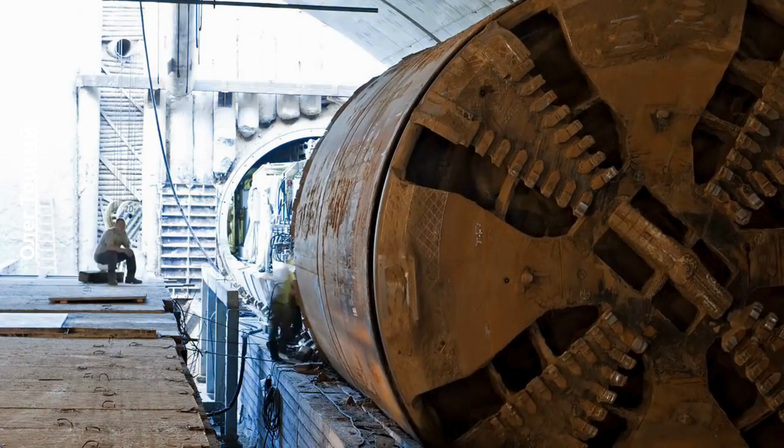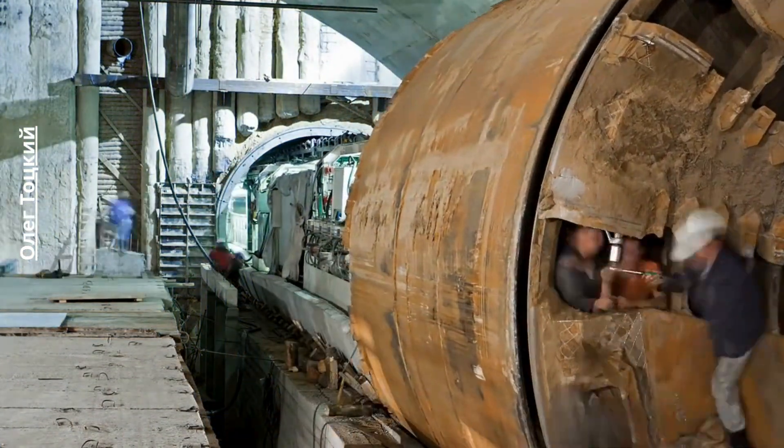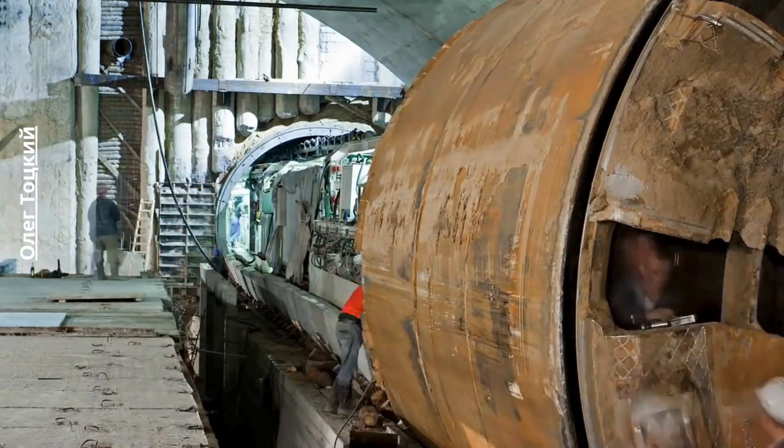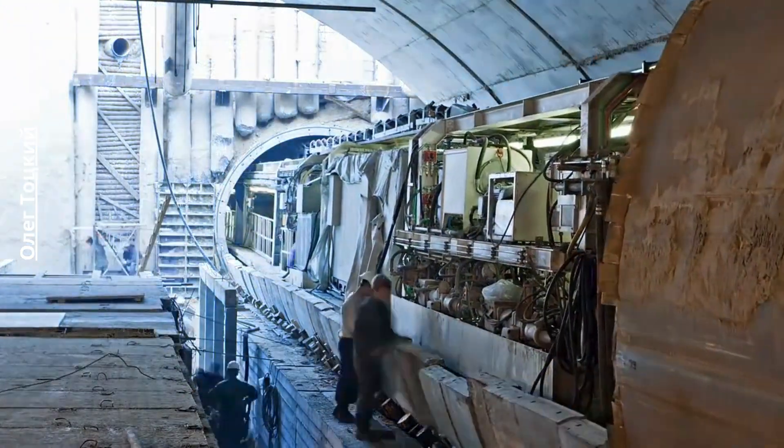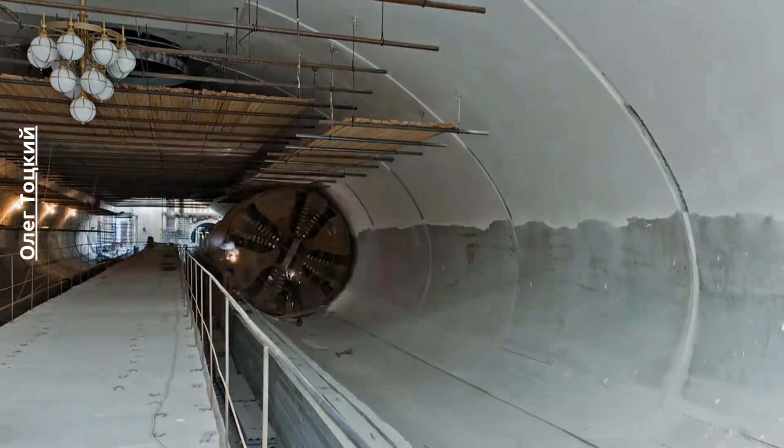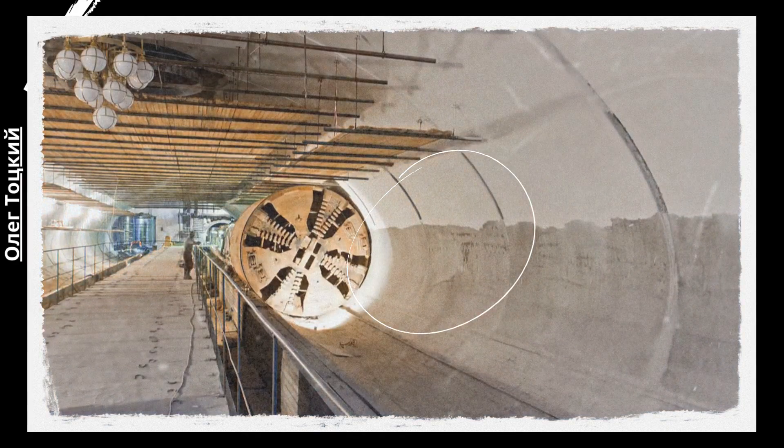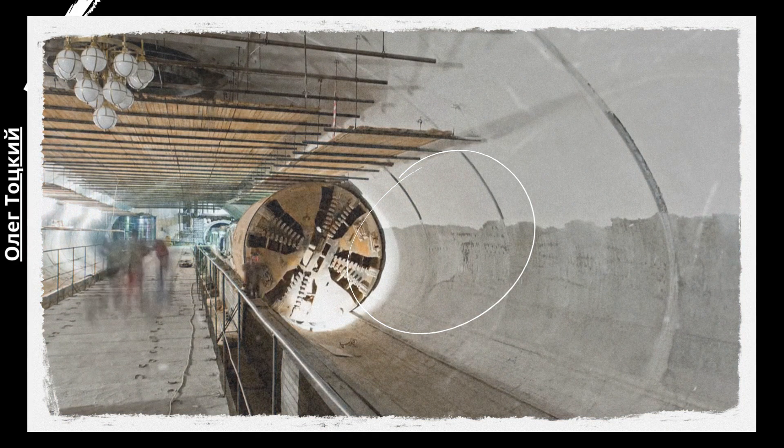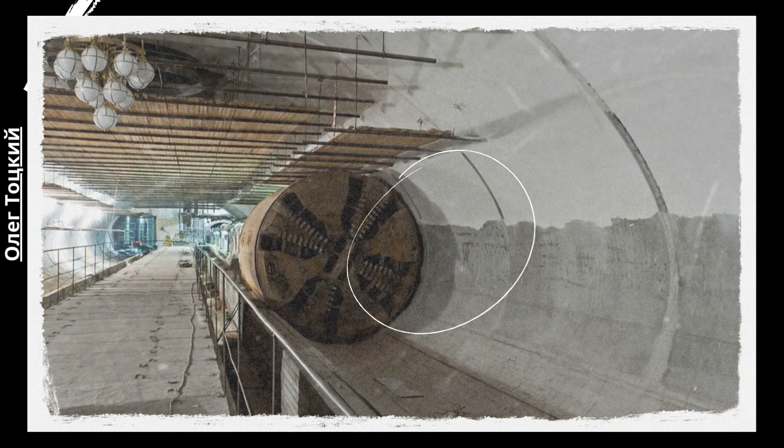The design and operation of Herenknecht TBMs can be tailored to suit the specific challenges of different tunneling projects. They are available in various sizes, ranging from smaller diameter machines for urban metro projects to enormous machines capable of cutting through hard rock or larger tunnels, such as those used for high-speed rail systems.